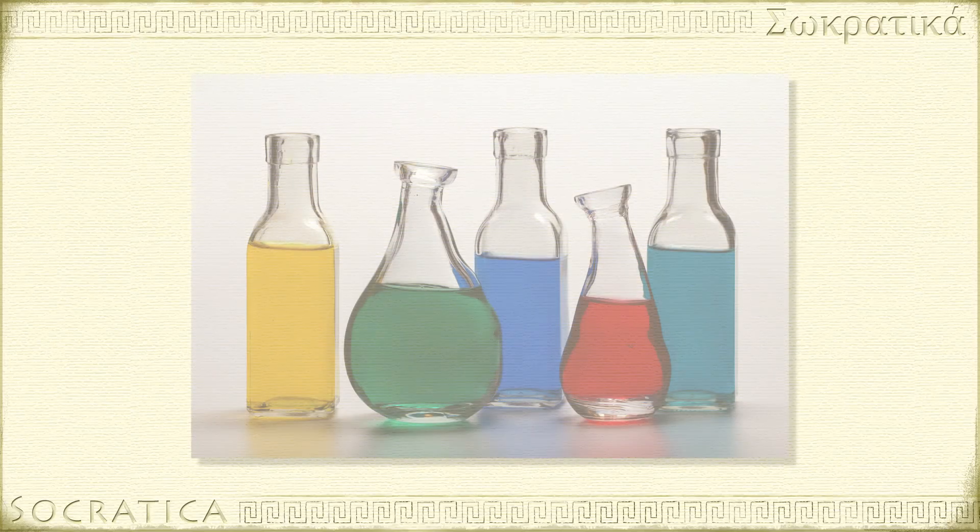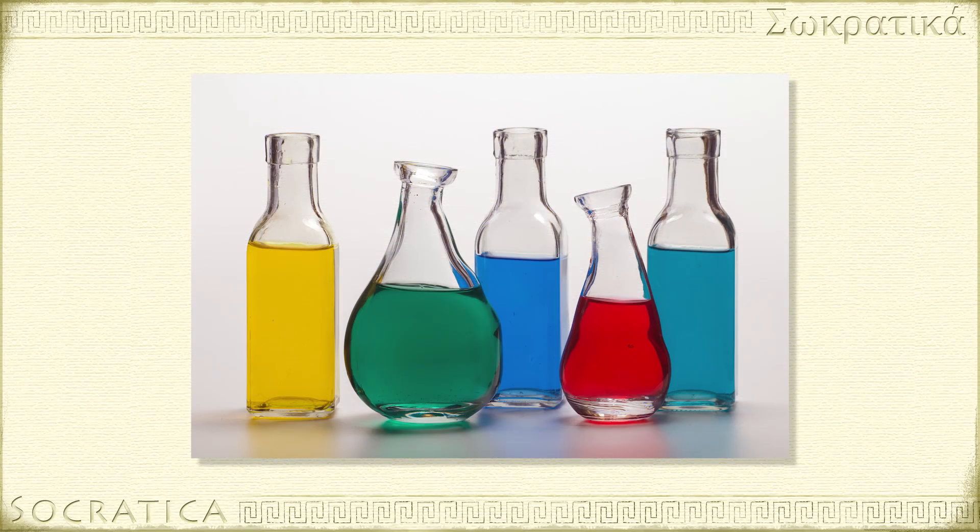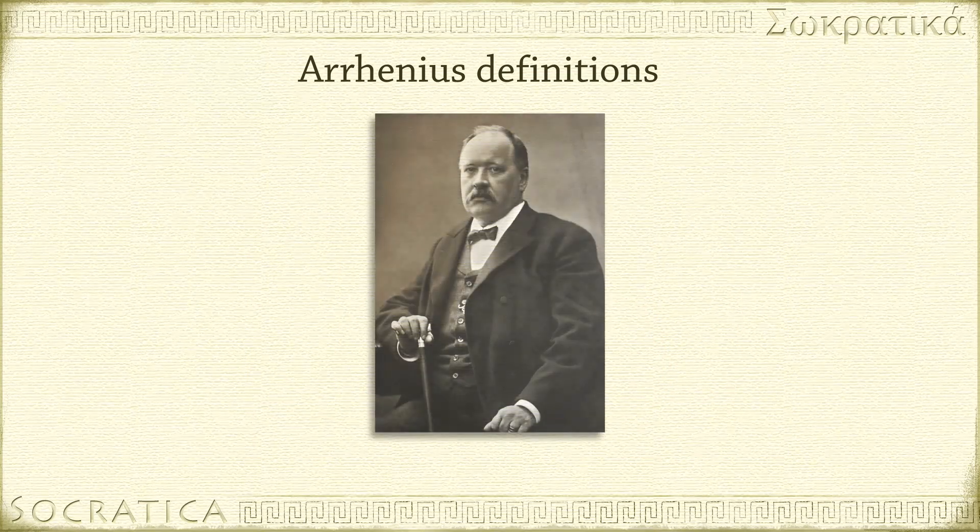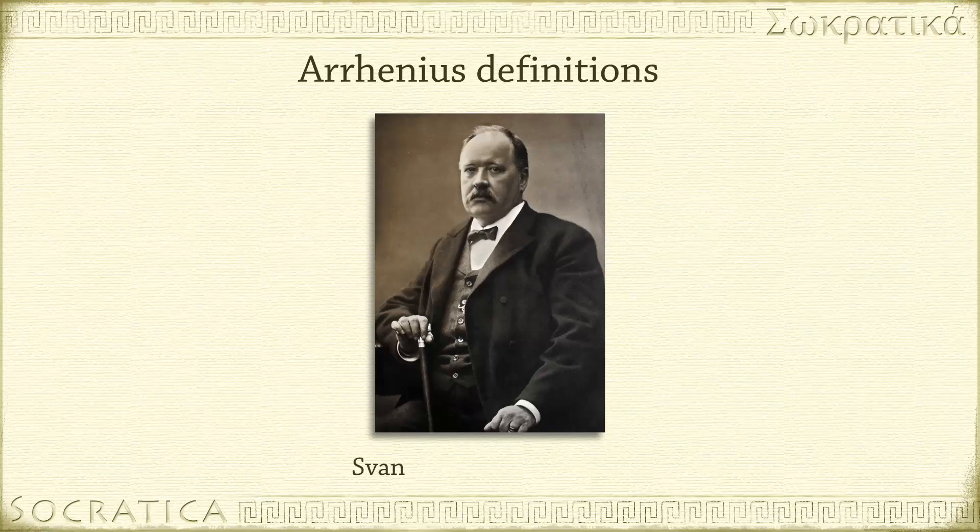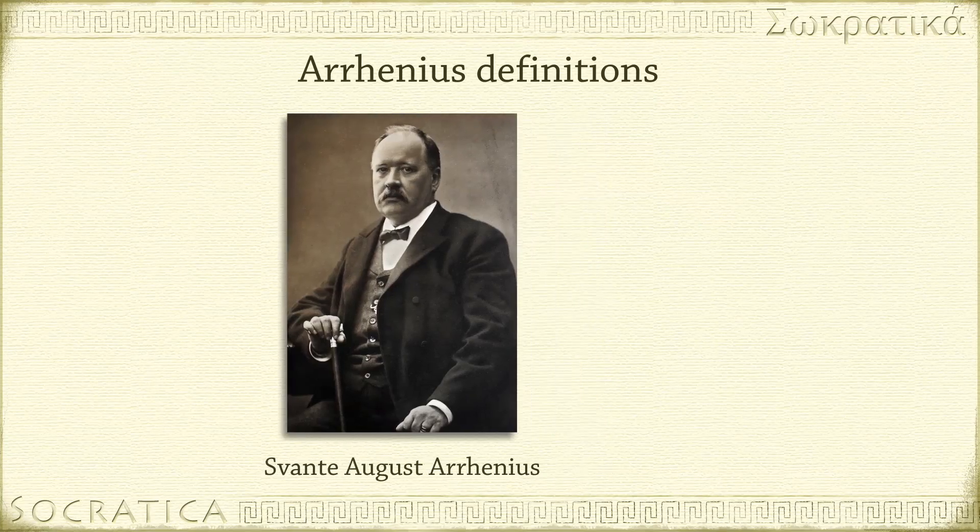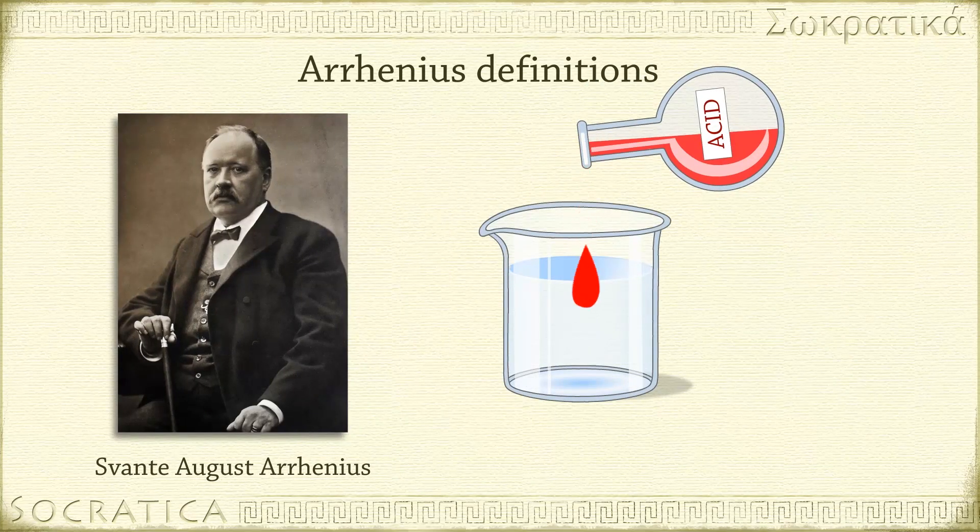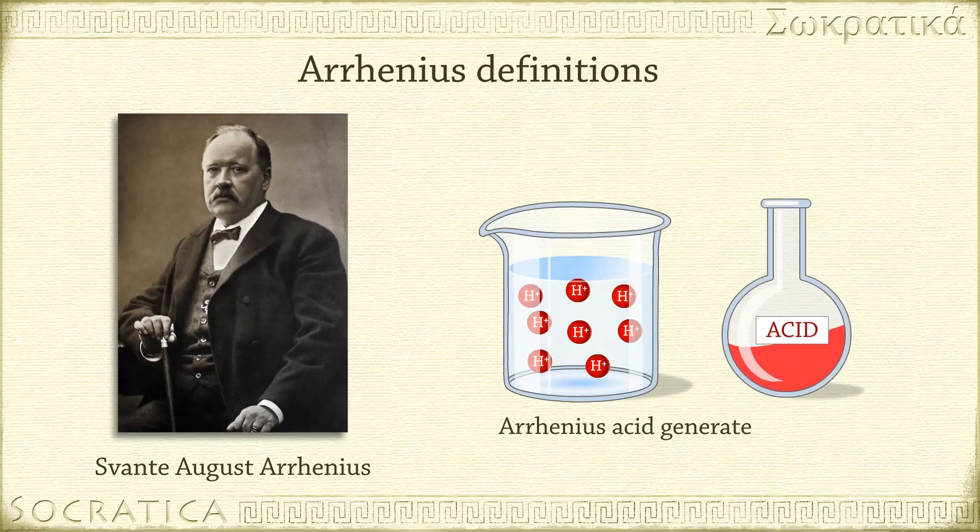But what does that mean to be an acid or a base? Here are two of the most useful definitions. An Arrhenius acid, named after Swedish scientist Svante August Arrhenius, is a substance that generates H+ ions when dissolved in water.